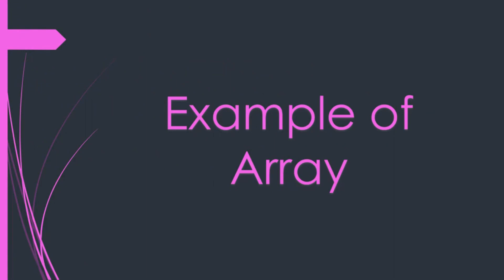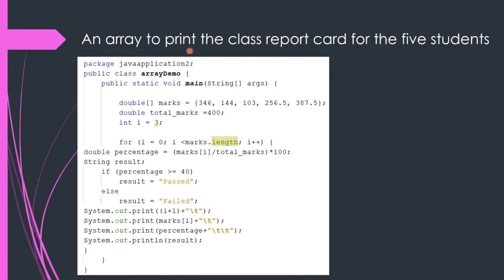First, let us discuss an example of an array. We have taken an example from your book in which we have to create an array to print the class report card for five students. You can see we have done the coding here. The first three statements are the basic statements we have been using from the very beginning of Java. The main coding starts with our array defined as 'marks', where we have given the marks of five students.